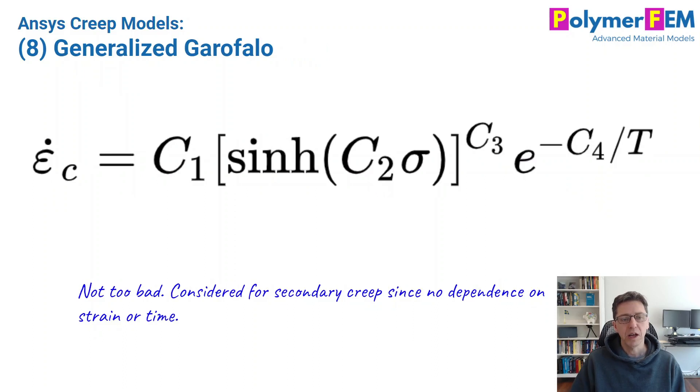Next one is the generalized Garofalo. This is a sinh model, so hyperbolic sine, and that's kind of nice because the hyperbolic sine function is zero if the argument is zero. So this one passes that test, and it has an exponential dependence in some sense on stress instead of the stress raised to a power. This is a complement to the strain hardening model, and I kind of like this one because of that. It doesn't have any strain dependence or temperature dependence, so it will be a secondary creep or steady state creep kind of model, as we talked about earlier.